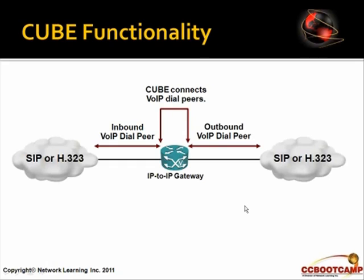Shown here, either SIP or H323 connects to our IP-to-IP gateway in the middle. This gateway can be any router supporting voice capabilities. As a call comes into this gateway, we have an inbound VoIP dial peer. Whether it's a regular PSTN-connected gateway or an IP-to-IP gateway, we always need an inbound and an outbound dial peer. Those dial peers determine how we communicate — SIP inbound to SIP outbound, or H323 inbound to H323 outbound — enabling communication from one side of our network to the other.